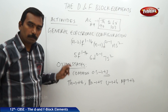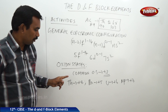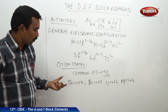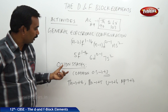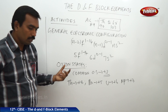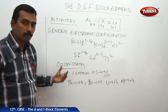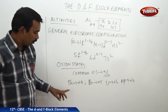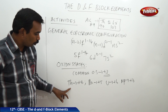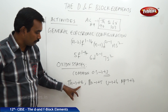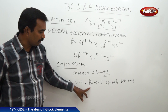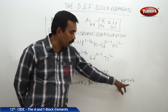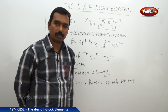Exceptions exist in actinides as well. Some elements exhibit higher oxidation states: thorium shows +4, protactinium +5, uranium +6, and neptunium +7.